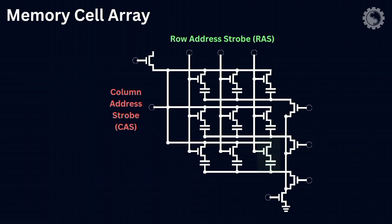For example, if we want this cell's data, the address raises the word line to create a path to this cell. Now the bit line retrieves data from this cell.